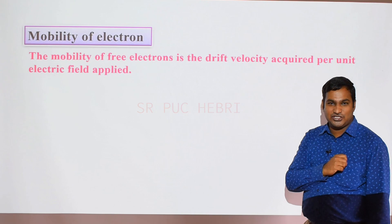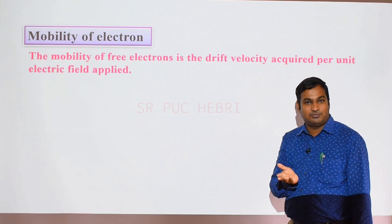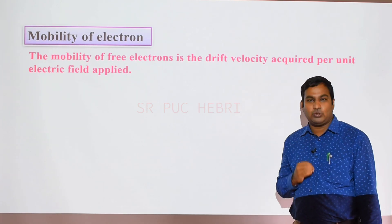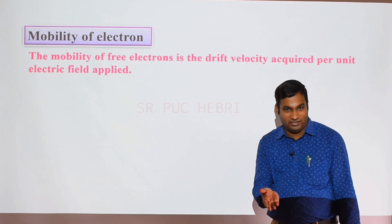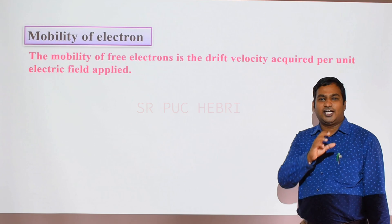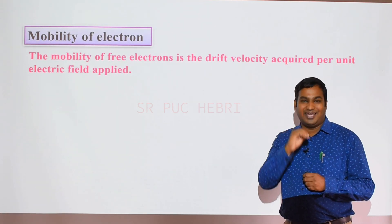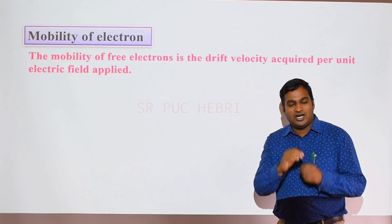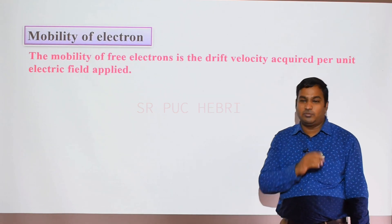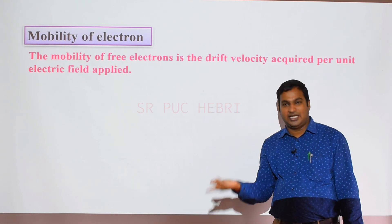In our last class, we learned the definition of drift velocity. Drift velocity is the average velocity of an electron with which electrons get drifted under the influence of an electric field. In a conductor, all electrons move randomly because outermost orbit electrons are loosely bound to the nucleus, free to move and collide with ions. So there is no net transfer of charge and no electric current.